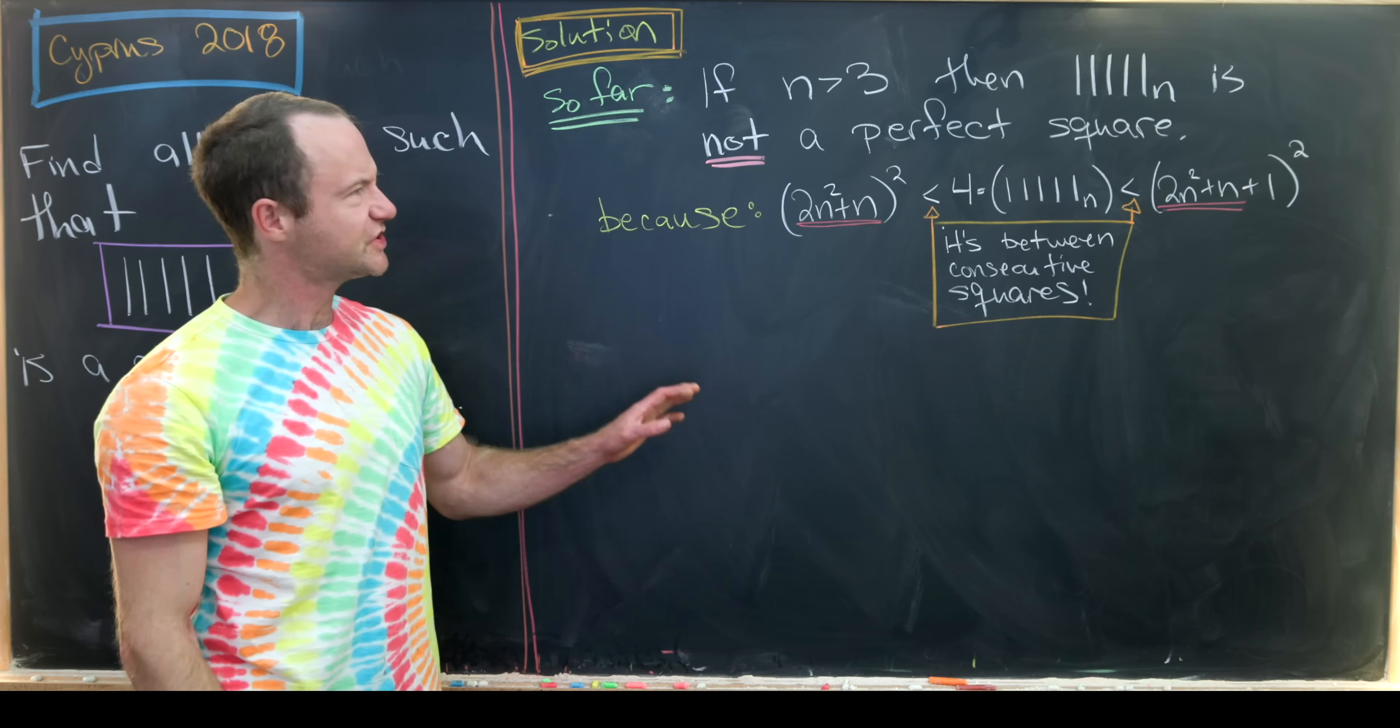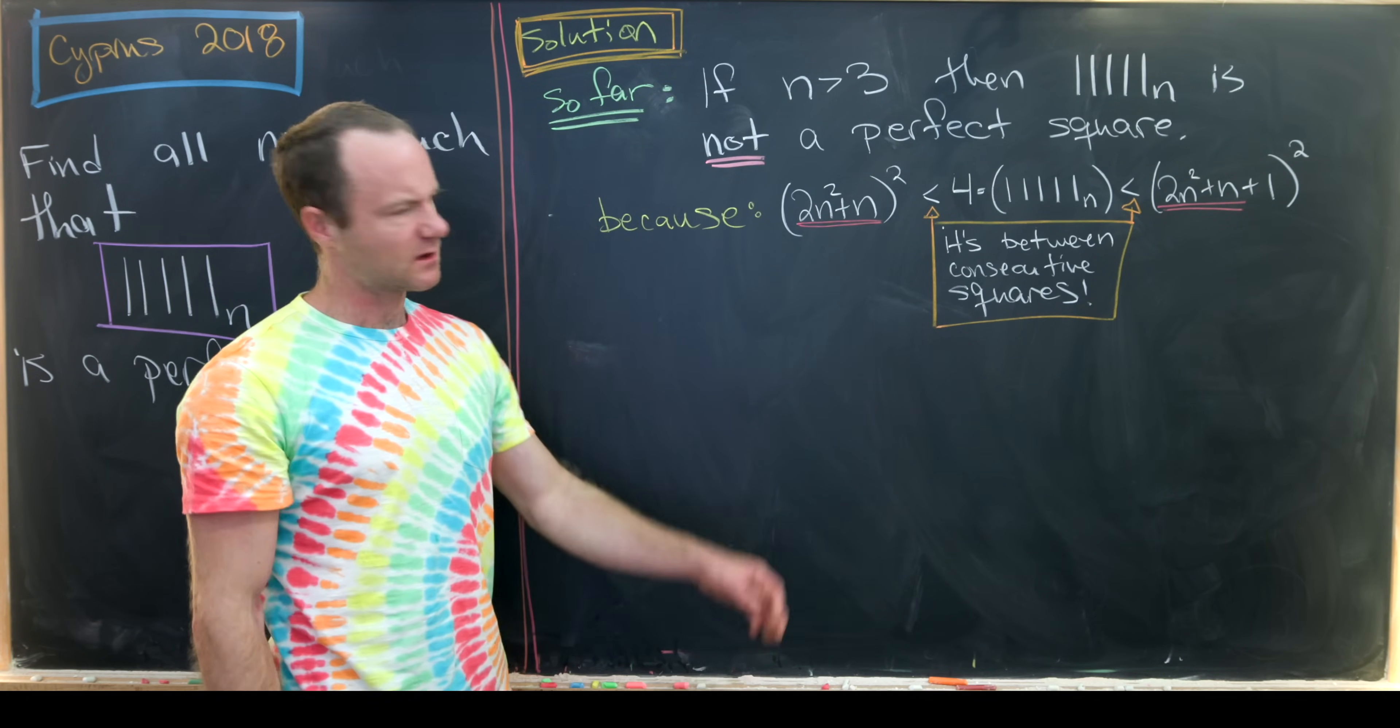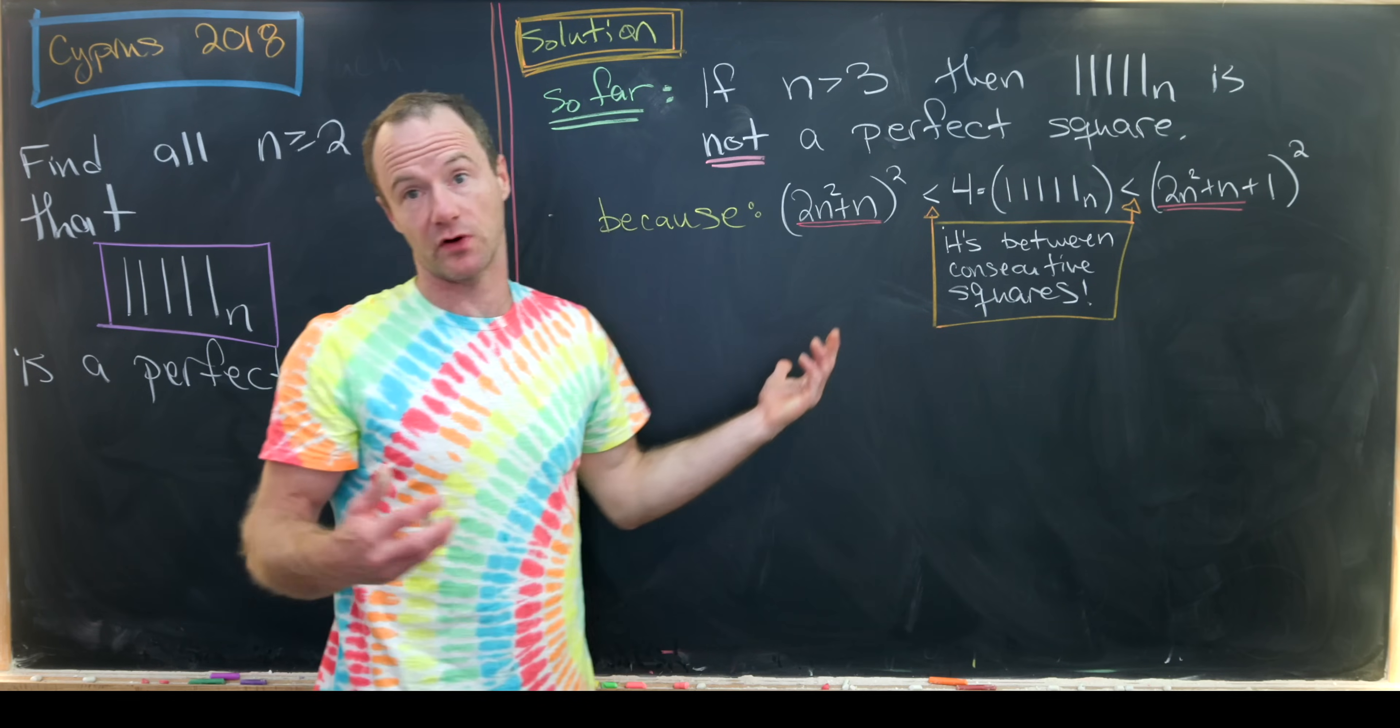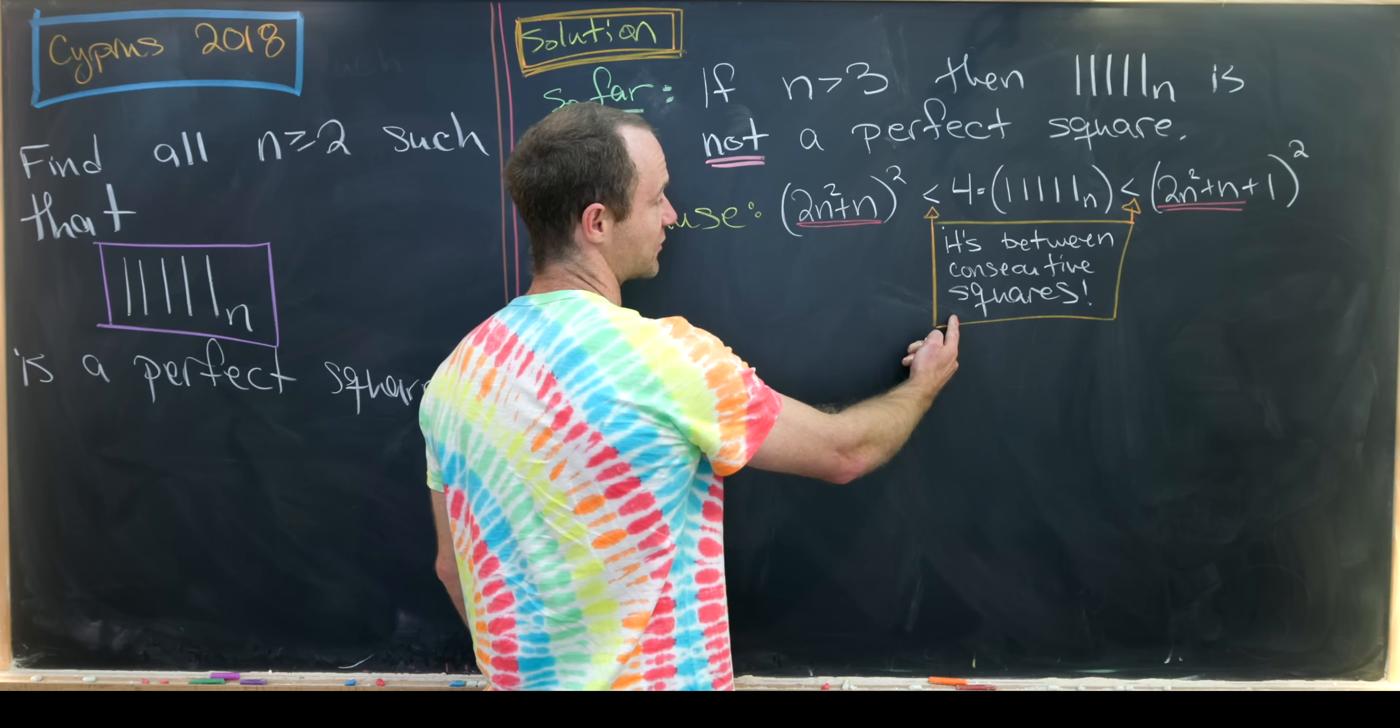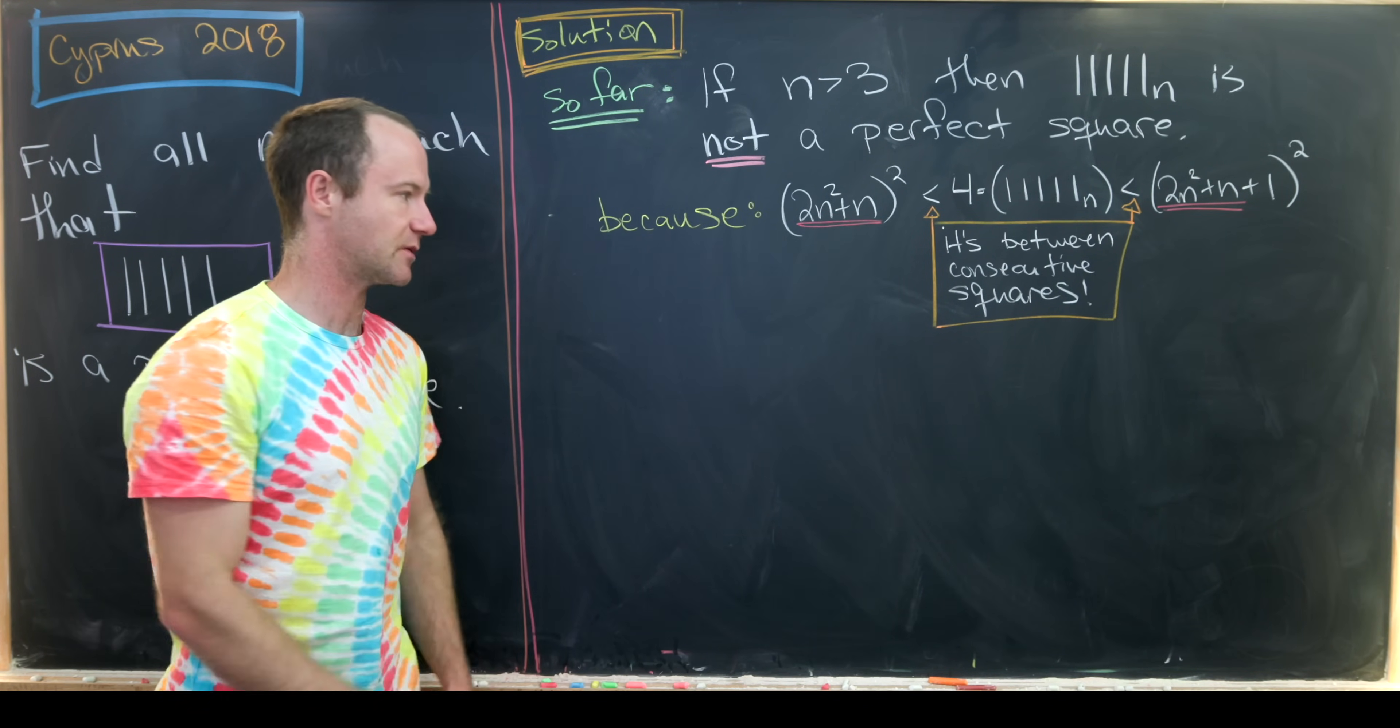So let's check each of those. So we just got done showing that if n is greater than 3, then our number 1, 1, 1, 1, 1 base n is not a perfect square. Let's recall that was because 4 times our number, which is a perfect square if our number is a perfect square, because it's the product of two perfect squares, is strictly between consecutive perfect squares. And those consecutive perfect squares are 2n squared plus n quantity squared, and 2n squared plus n plus 1 quantity squared. And if you're in between two consecutive perfect squares, then you cannot be a perfect square.